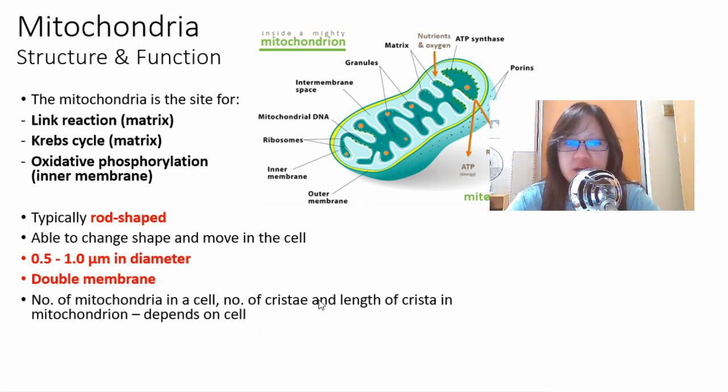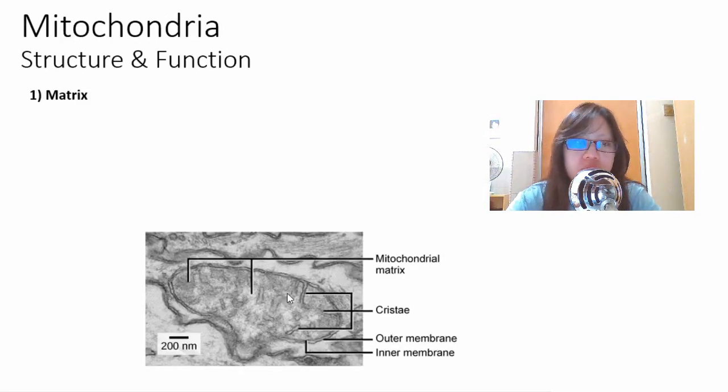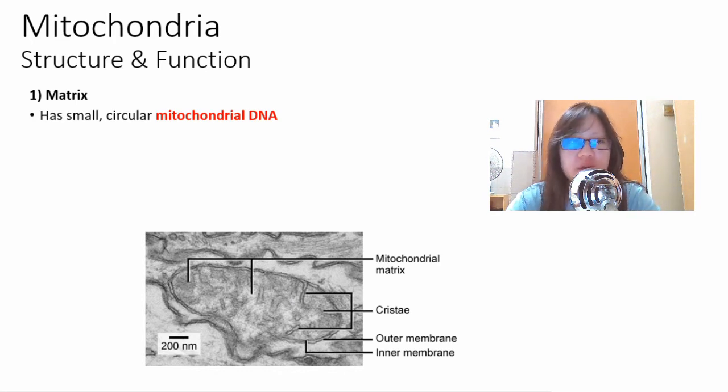The number of mitochondria in a cell, number of cristae and length of cristae in a mitochondria really depends on the cell. Let's look at the structure and function, starting with the matrix.